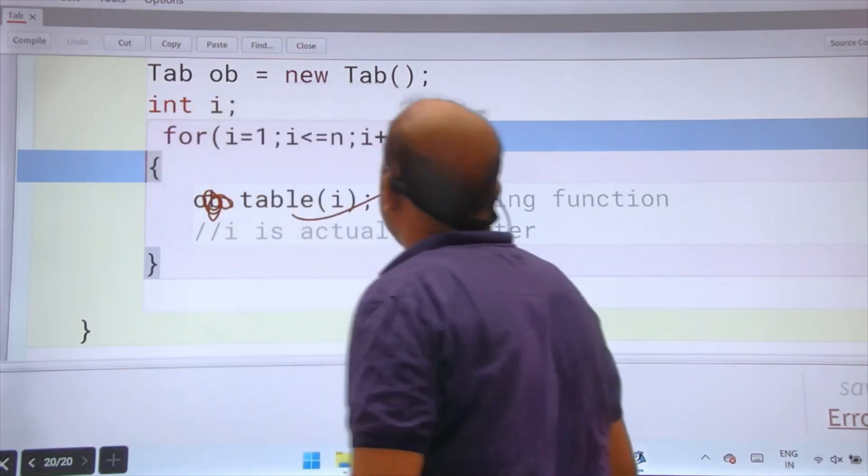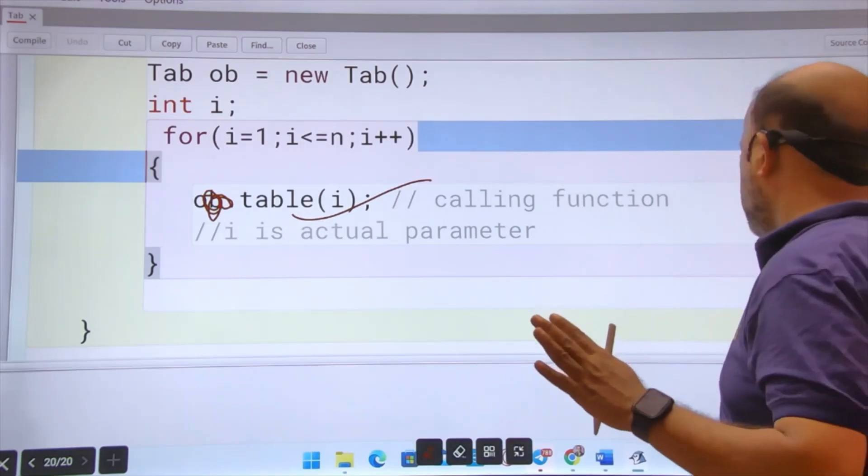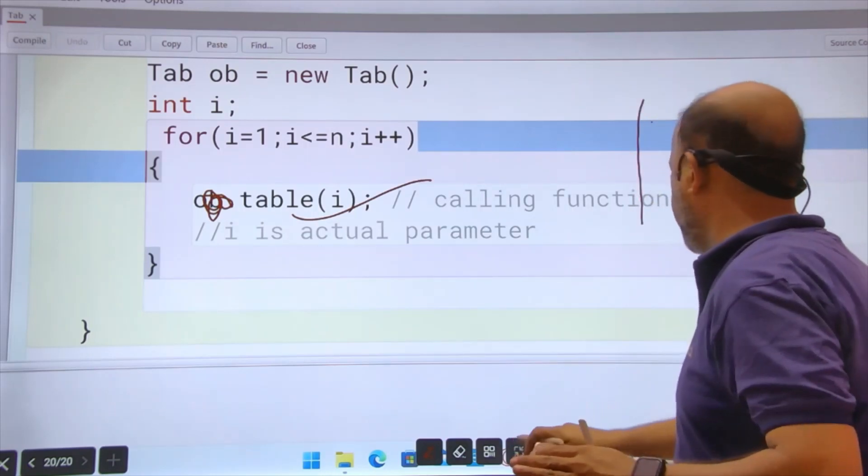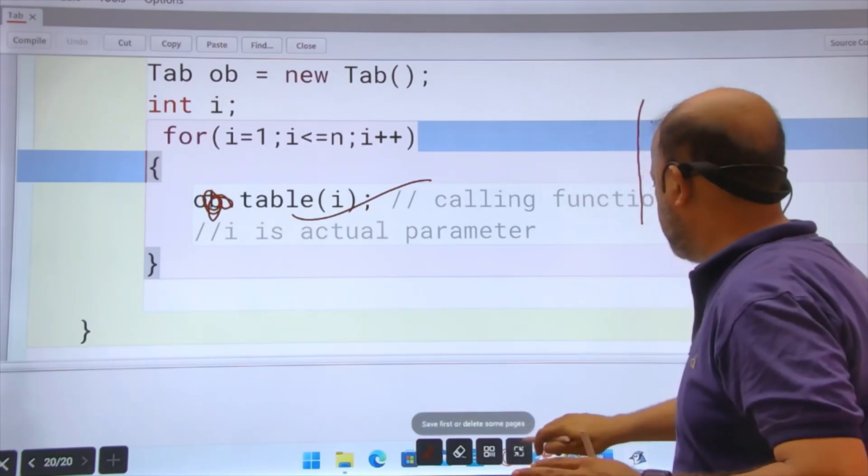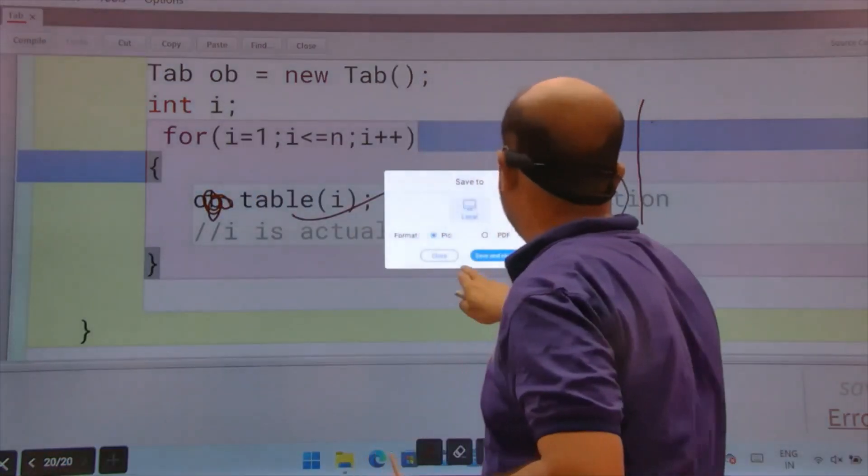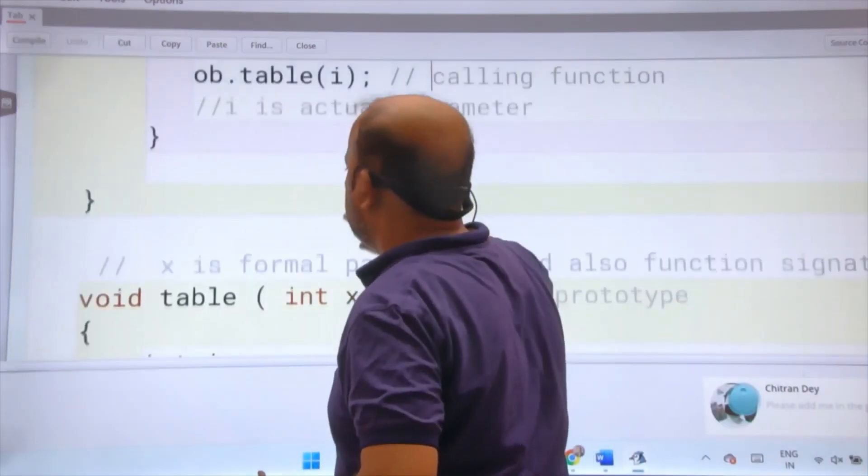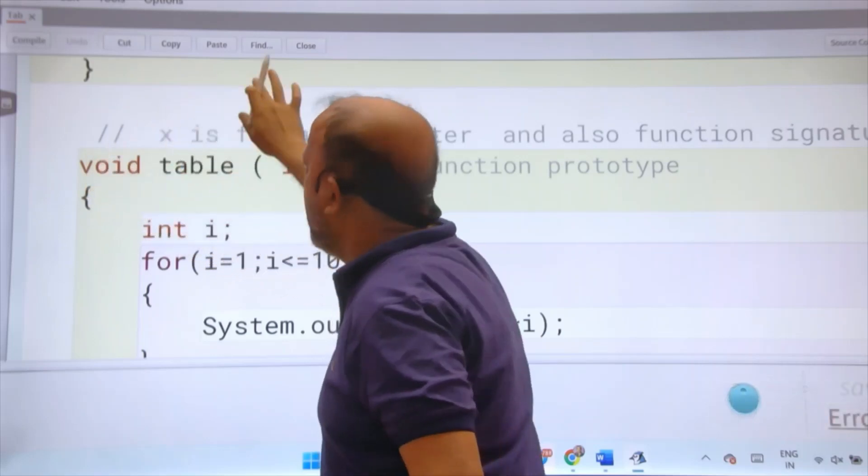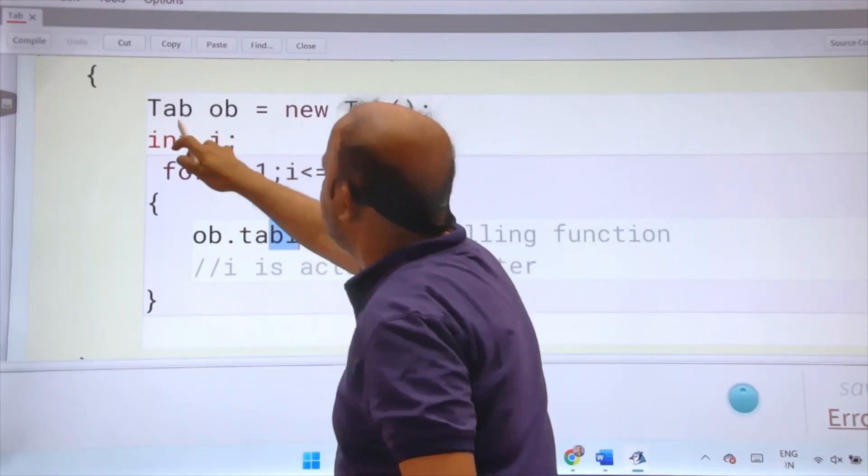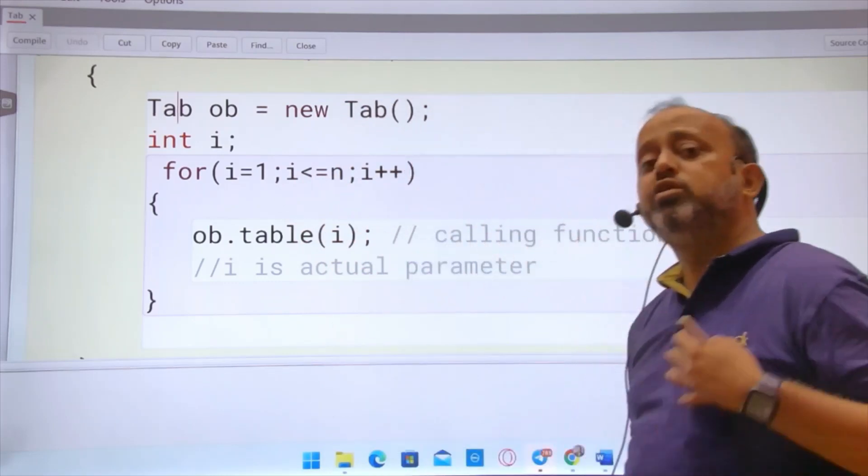But if you have public static void main, if you have public static void main, then your this function should also be static. Here you can see you have just void main, so you can write ob dot table i. Object Tab ob = new Tab. ob dot table i. Table is a user defined function. Two types of functions: one function is provided by the compiler or inbuilt function, or one function defined by user.